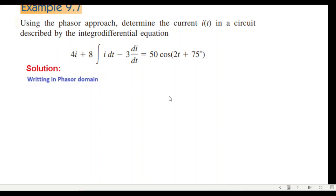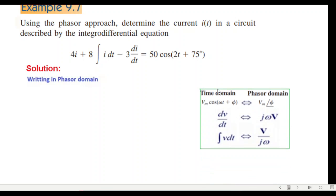In the phasor form, the output dv/dt and di/dt, I am writing as j omega V for voltage and j omega I for current. Integral i dt, I convert to I phasor divided by j omega.